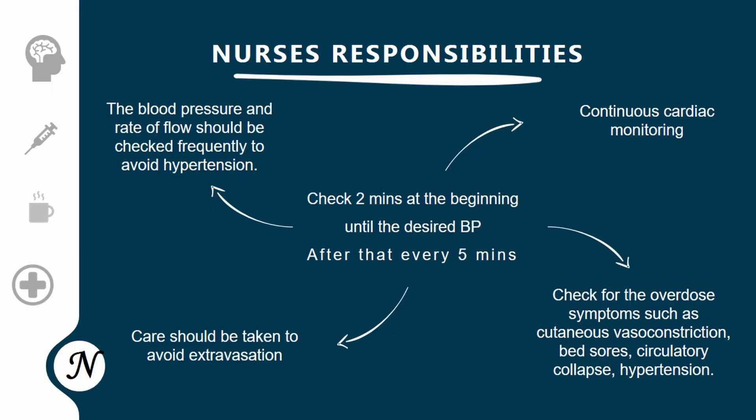What are the nurse's responsibilities while administering the drug? The nurse should check blood pressure every 2 minutes at the beginning until the desired BP is attained, and then every 5 minutes thereafter. The rate of flow should also be checked frequently to avoid hypertension. The patient should be on continuous cardiac monitoring, and the nurse should check for overdose symptoms such as cutaneous vasoconstriction, bed sores, circulatory collapse, and hypertension.